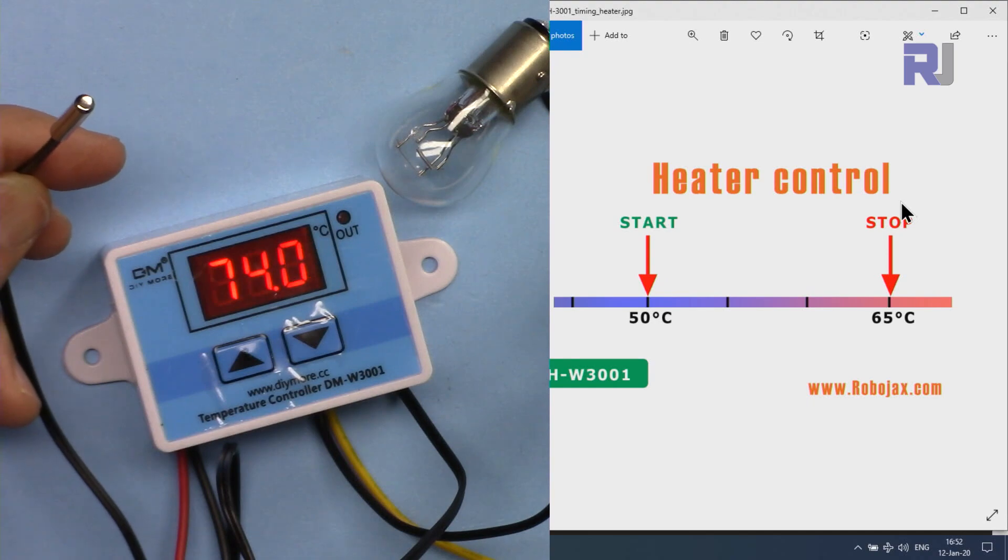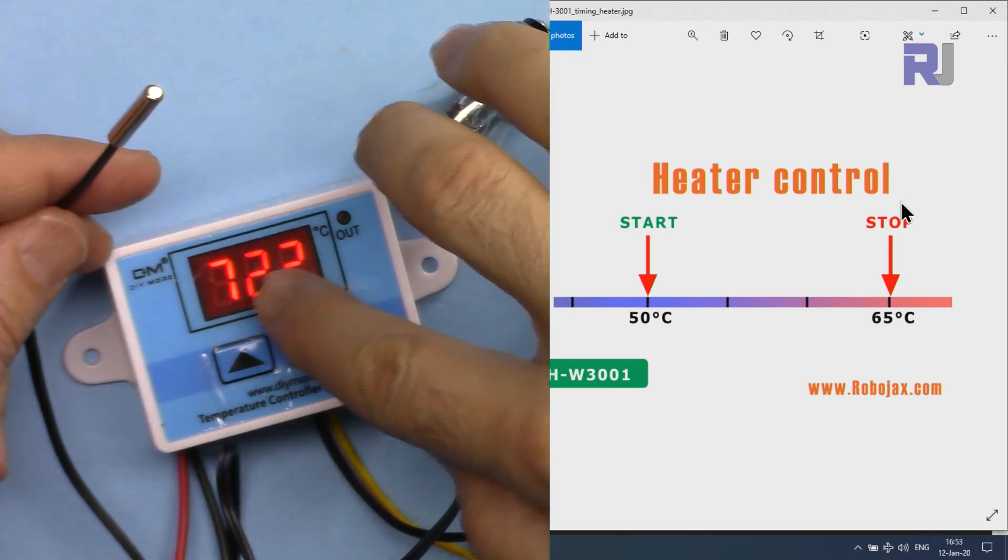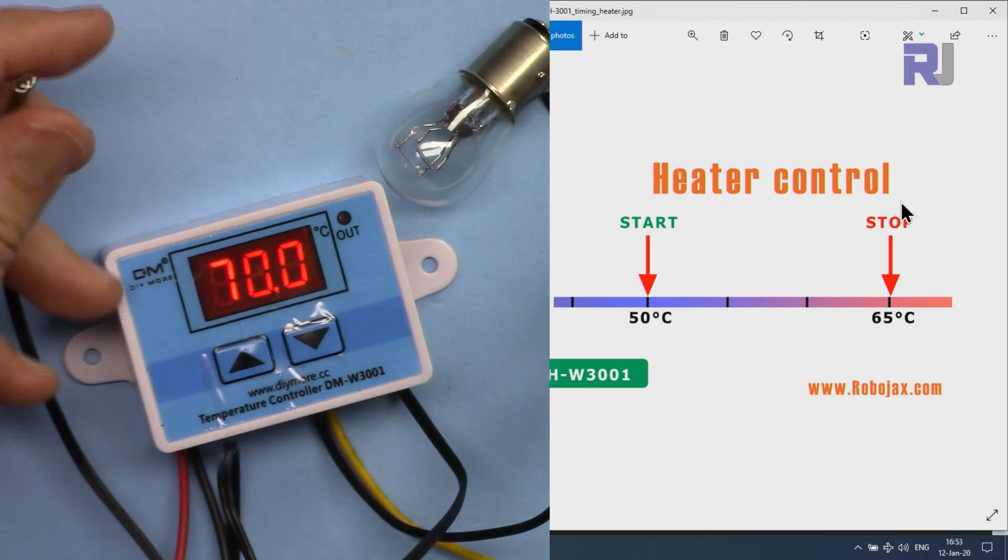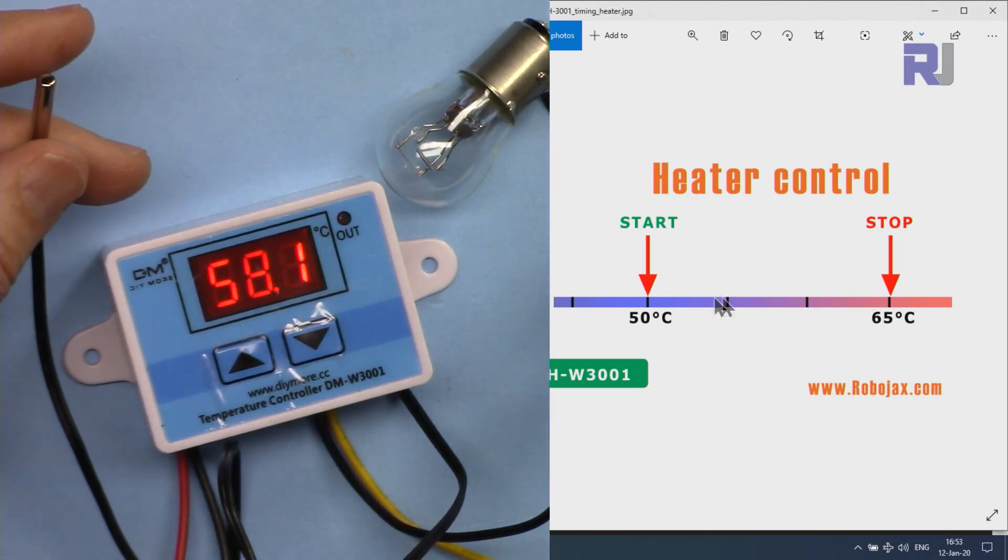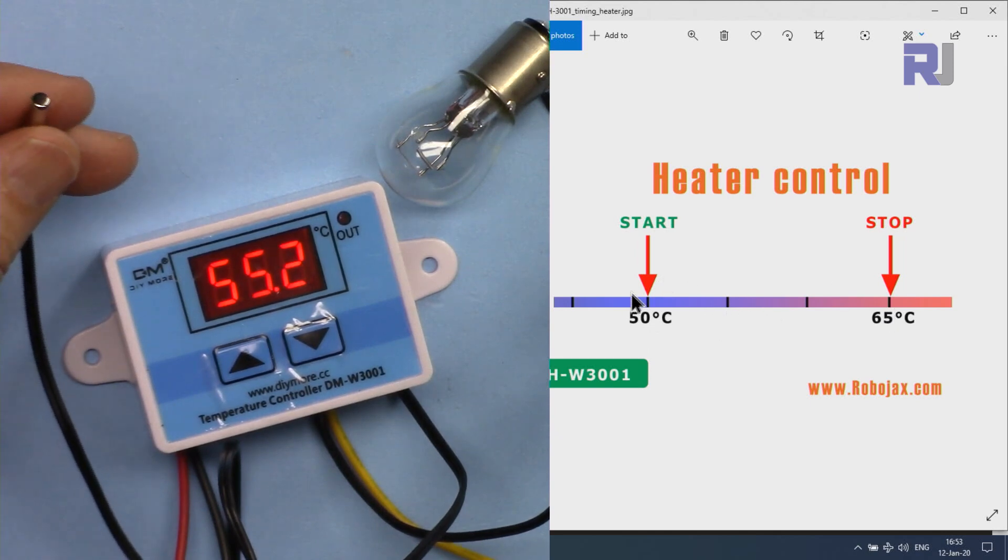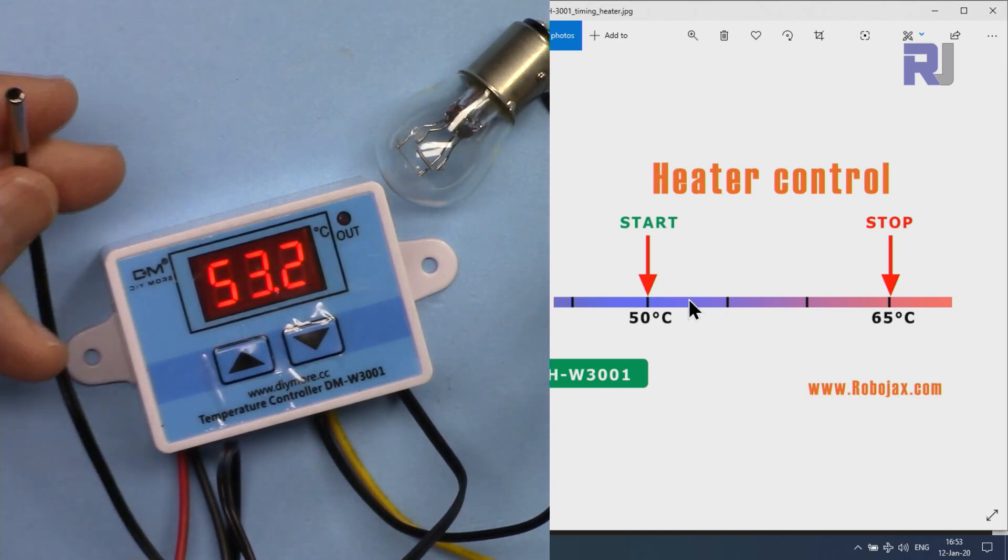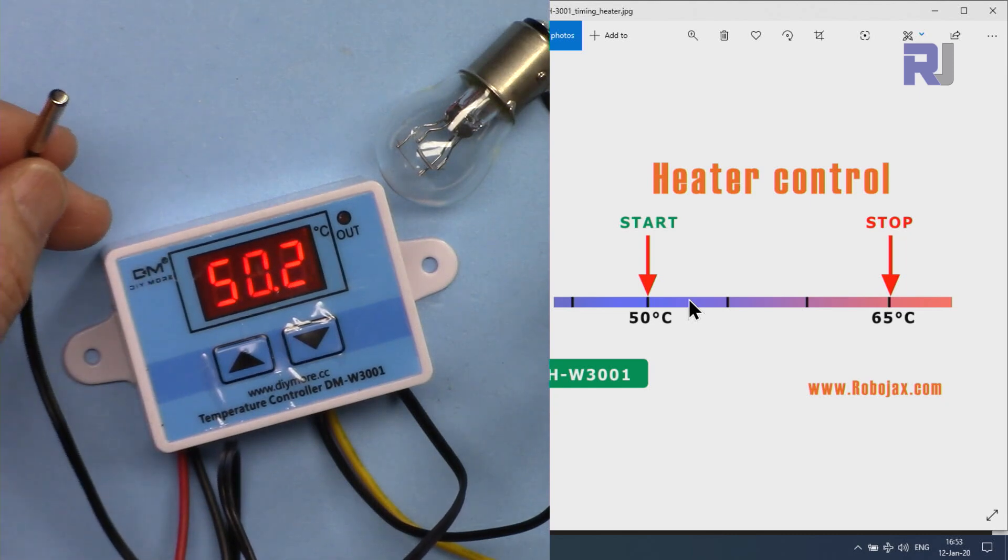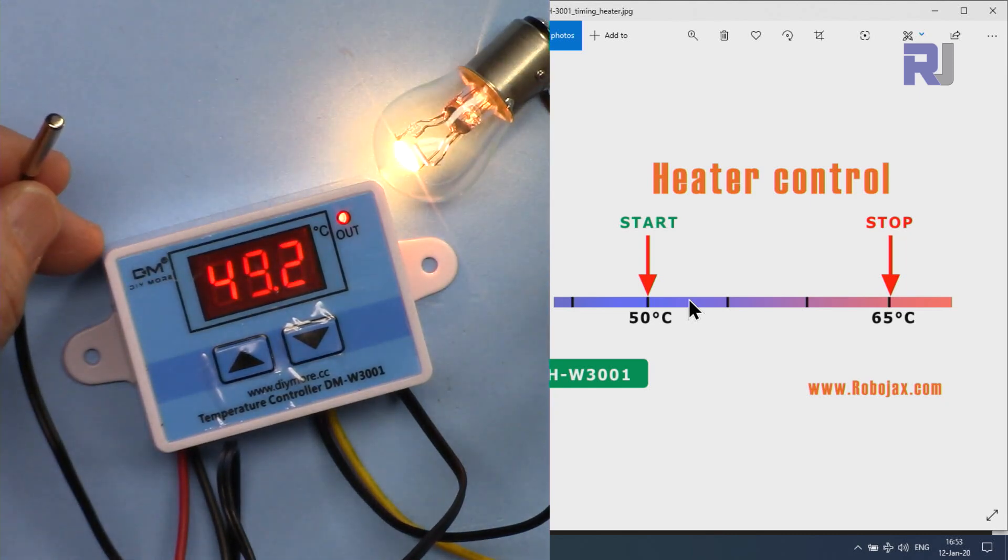So it has stopped now, and because the temperature is way above 65 it stopped. This will turn on again at 50, not at 65. When it goes down to 50 you will see it turn on. Now it reaches very quickly to 50 and it will turn on. This was how to use it as a heater.